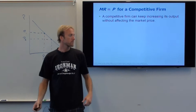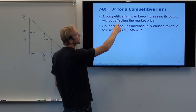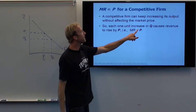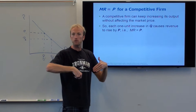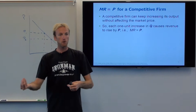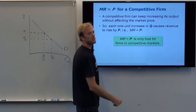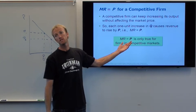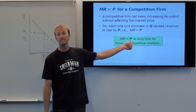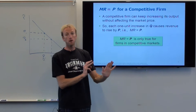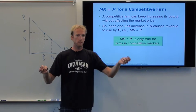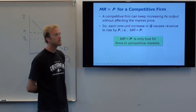Because I can change Q and P doesn't change, every time I make one more product, my marginal revenue is always just whatever the market price P is. This is only true for firms in competitive markets, but it makes the math so much easier — I never have to calculate marginal revenue; I just know it equals P. I still have to figure out marginal cost, because that's the other half of profit maximization.